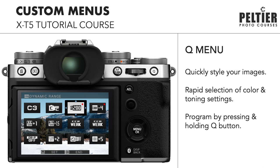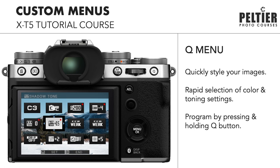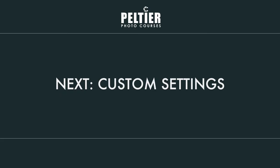Which settings should you include in the Q menu? If we're putting all of our camera setup settings into My Menu, it makes sense to reserve the Q menu for image quality settings — film simulation, highlight tone, shadow tone, color, things like that. I'll have some recommendations in the text outline, but put whatever makes sense for your workflow. These two menus are just some of the many ways you can customize your camera for more efficient photography. In the next lesson, we're going to look at customizing the controls.